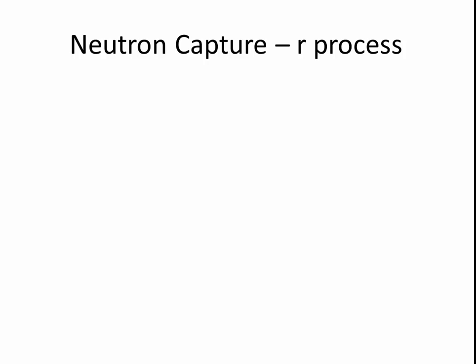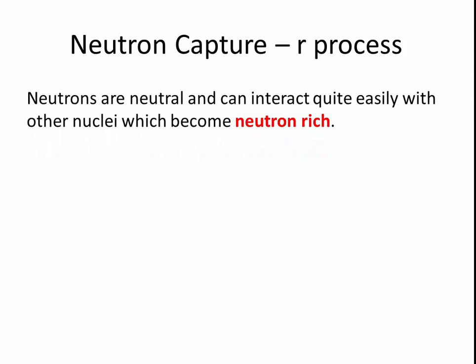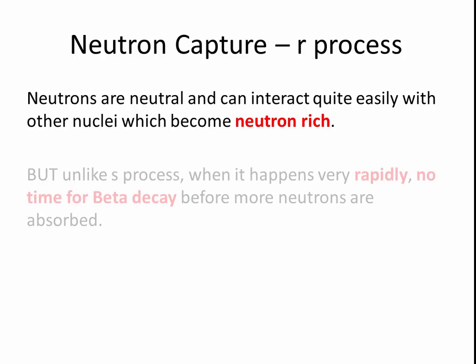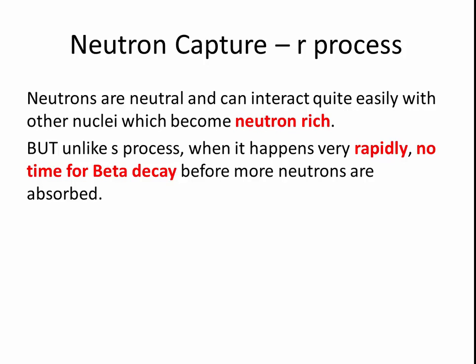On the other hand, we have neutron capture which is the r-process. R stands for rapid. If s is for very, very slow, r is for very, very rapid. As before, neutrons are neutral and they can interact quite easily with other nuclei which become neutron rich. But unlike the slow process, when this happens, it happens very rapidly, so there is no time for beta decay. It means that more and more neutrons are absorbed and they don't get the chance to undergo beta decay because that takes a lot of time.